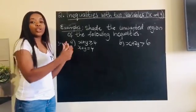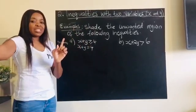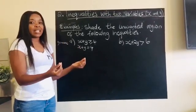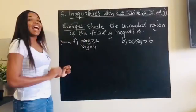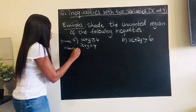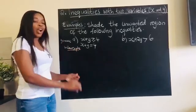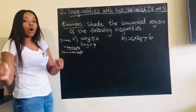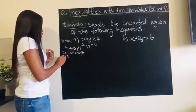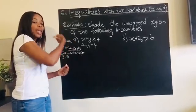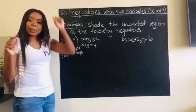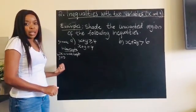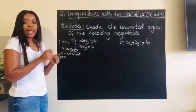I want to draw this graph, so I need certain points. We have two ways to solve this: you can decide on certain points from your negative side of x, include zero, go to the positive side, and substitute into your equation — or you can simply find where the graph cuts the x-axis and where it cuts the y-axis, then connect. That's finding the intercepts. To get the x-intercept, you always let y equal to zero, because the line y=0 is the x-axis.